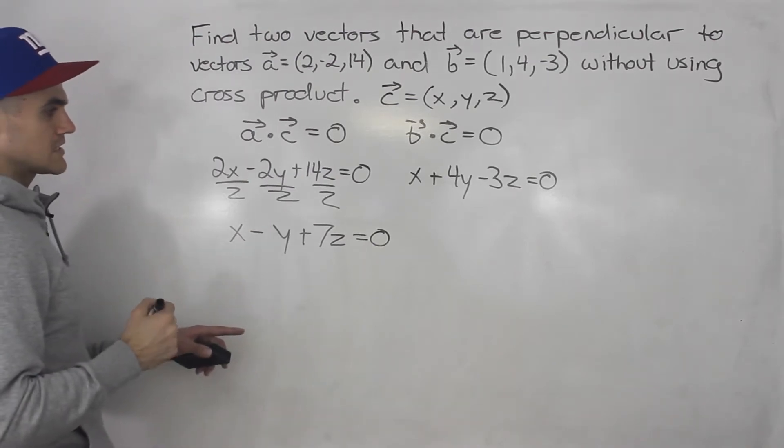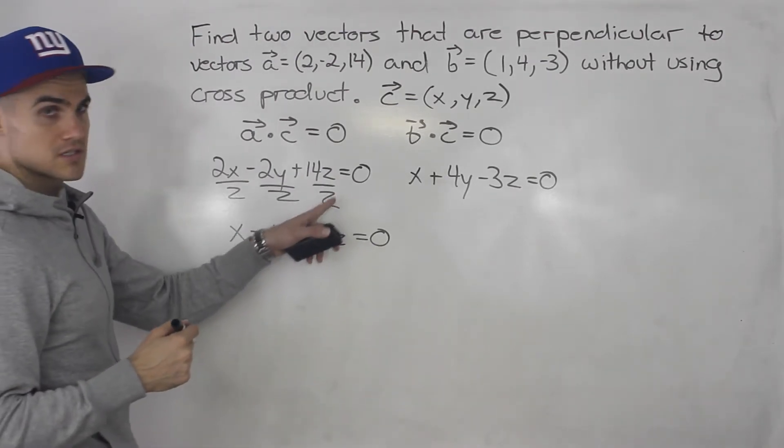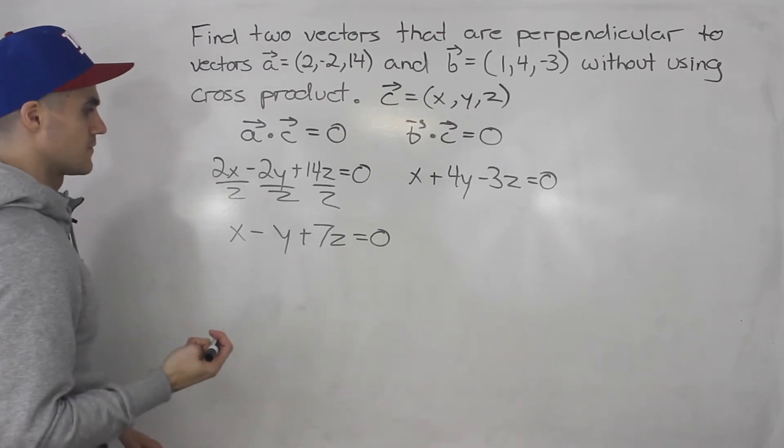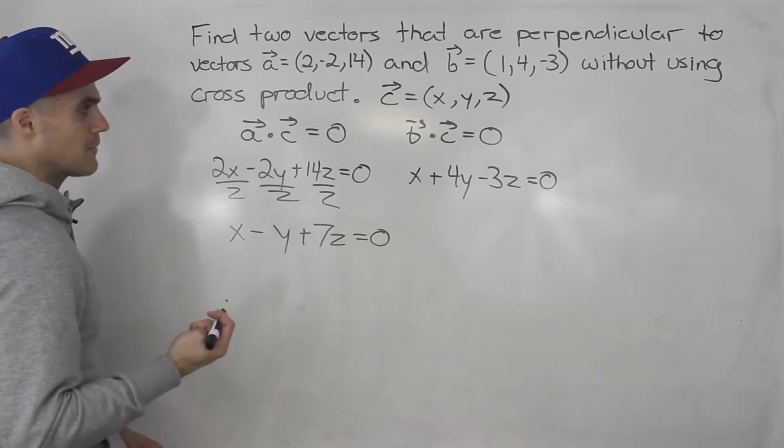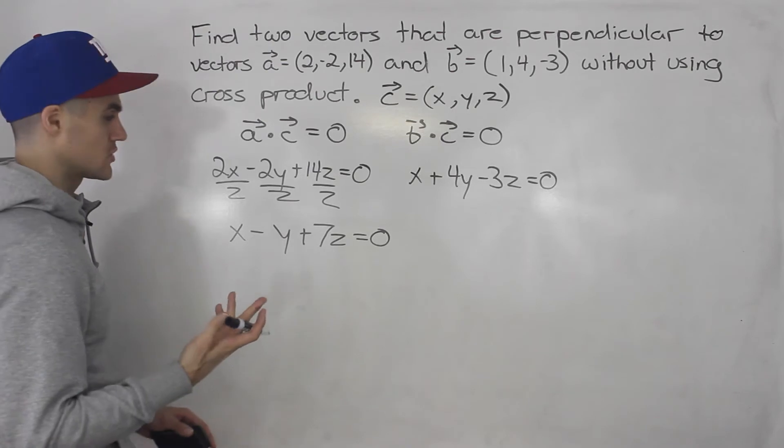So notice now that we have two equations, but we have three unknowns. So what's most likely going to happen is we're going to have an infinite solution.